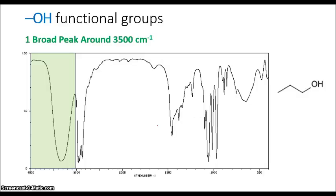So first, let's look at the hydroxyl functional groups. The hydroxyl functional groups will show a broad peak around 3500 cm⁻¹. So we have 1-propanol over here, and we see this broad peak. It goes all the way down. This is very characteristic of an OH functional group.